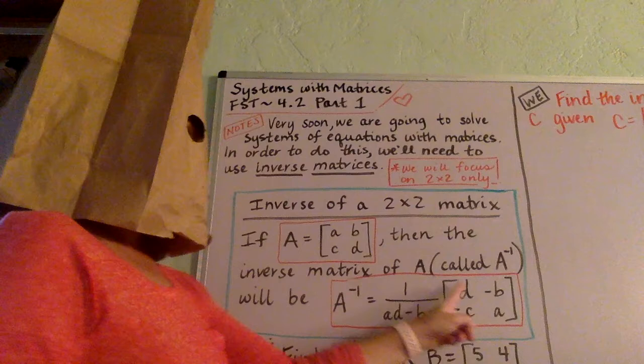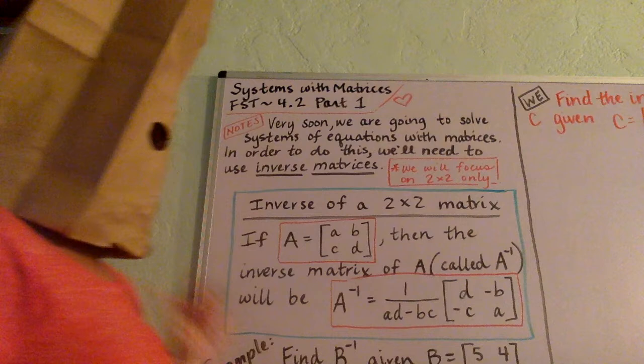And then after it, behind it, you switch the spots of the a and the d. You keep the b and the c where they are, but you change their signs. All right, so here we go.